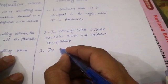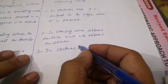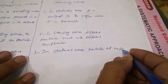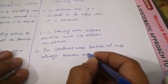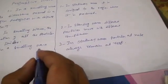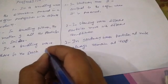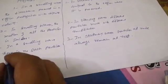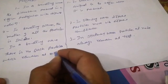In stationary waves, particles at nodes always remain at rest. While in a travelling wave, there is no such particle which remains at rest always.